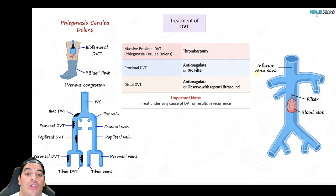Once PE is confirmed, get an echocardiogram to risk stratify. If the echo shows no RV dilation or RV dysfunction, it is a low-risk PE. If it does show RV dilation or RV dysfunction, it is a submassive or massive PE. On echo, the right ventricle should not be bigger than the left — if it is, that's RV dysfunction. Then check blood pressure: if BP is low, it's a massive PE; if BP is normal, it's a submassive PE.